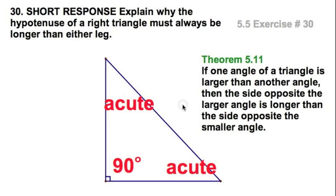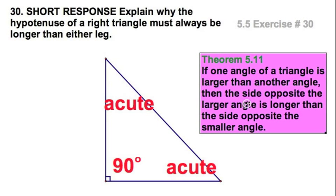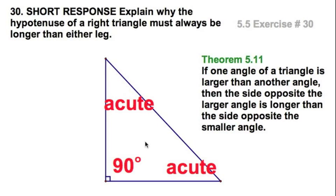In case you've ever wondered why the hypotenuse is the longest side in the right triangle, theorem 5.11 tells us. This angle is 90 degrees. There's only 90 degrees left to spread between these two, so these two have to be acute by definition. Largest angle opposite largest side.